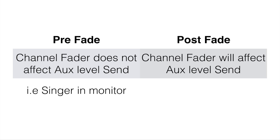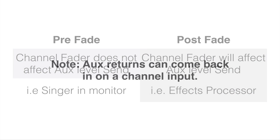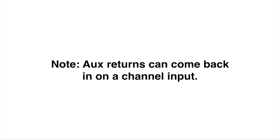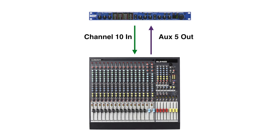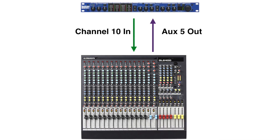A singer typically wants to hear a solid signal throughout their performance, so using pre-fade is preferred so that when you make adjustments to their fader, they will not hear those adjustments and will have the confidence to hear themselves accurately. However, in the post-fade setup, one typical use is with an effects processor, meaning the stronger signal you send via the fader, more of that signal will be sent to the effects unit, creating a more dynamic response. Note that auxiliaries can also come back in on a channel input, and some engineers prefer the output of the effects unit to return on another channel, allowing them to control the amount of effect sent to the main mix through a fader.